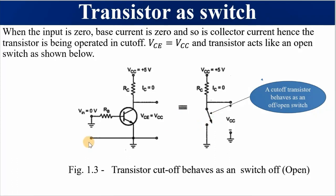This circuit is equivalent to an open switch. When the input is zero, the transistor will be off, and when the transistor is off, the voltage between the emitter and the collector will be equal to the supply voltage. Supply voltage develops across an open switch, hence the output voltage equals Vcc. A cutoff transistor behaves as an off or open switch, hence the collector-to-emitter voltage equals the supply voltage — this is our output voltage.